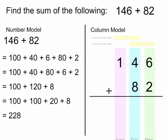Let's try some larger numbers. So 146 plus 82. If I have the 146 broken down into hundreds, tens, and ones this time, and the 82 broken down to tens and ones, I rearrange the problem. When I'm adding up the tens here, you'll notice that 40 plus 80 gives me 120.